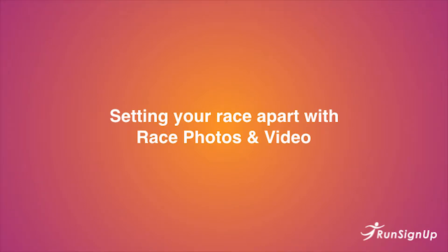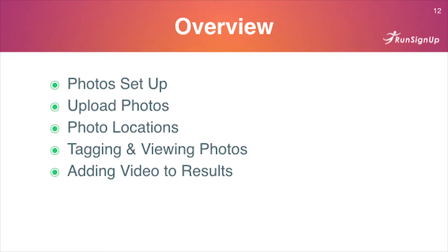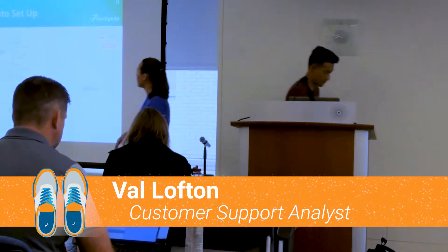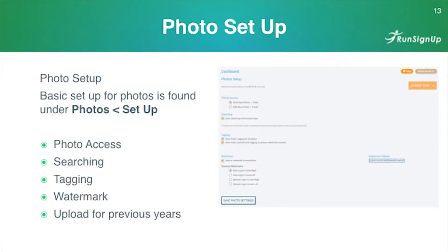Now we're going to do race photos — and if we have time, video as well. We'll go through the photo setup, uploading photos, adding photo locations, tagging, viewing photos, and adding video to results. The photo setup is found under Photos, then Setup. On that page you'll see options for whether you want the public to be able to view photos or keep them private, whether you want people to be able to tag themselves or tag their friends by bib number or name. Save those settings.